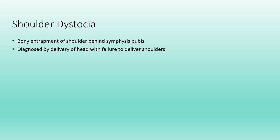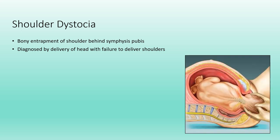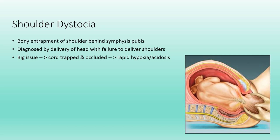Shoulder dystocia is bony entrapment of the anterior shoulder behind the pubic symphysis. It's diagnosed when the baby's head delivers but the shoulders fail to deliver. As you can see in the picture, the anterior shoulder of the baby is caught behind the pubic symphysis. The big issue is that you get the cord trapped and occluded, which can lead to rapid hypoxia and acidosis, with associated birth trauma and complications.